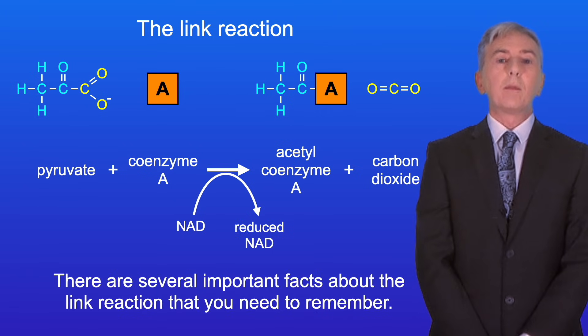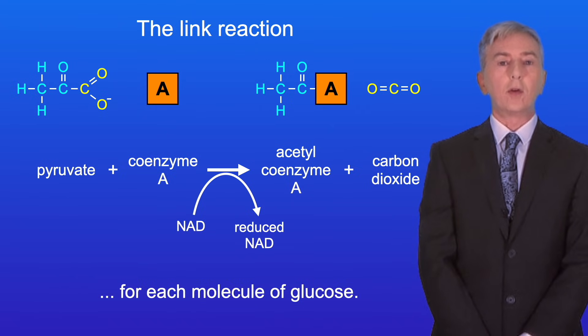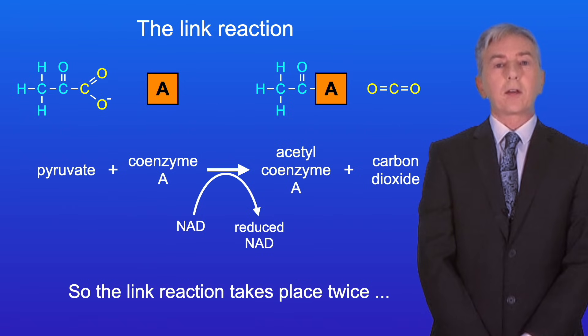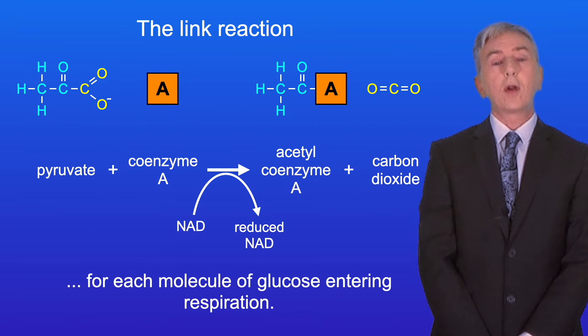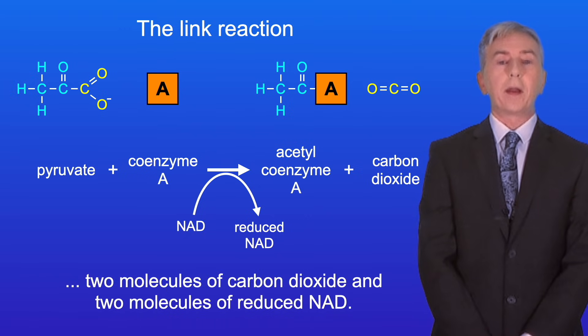Now there are several important facts about the link reaction that you need to remember. Firstly, glycolysis produces two pyruvate molecules for each molecule of glucose. So the link reaction takes place twice for each molecule of glucose entering respiration. This means that per glucose, the link reaction produces two molecules of acetyl coenzyme A, two molecules of carbon dioxide, and two molecules of reduced NAD.